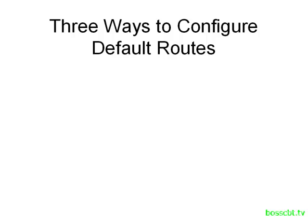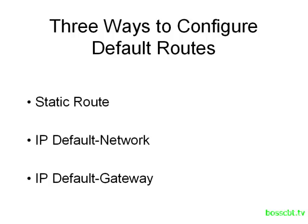We're going to continue the conversation and take a look at these three methods. The first one, we'll use a static route in order to create a default route, and then we'll take a look at how to use the IP default network command and the IP default gateway command.